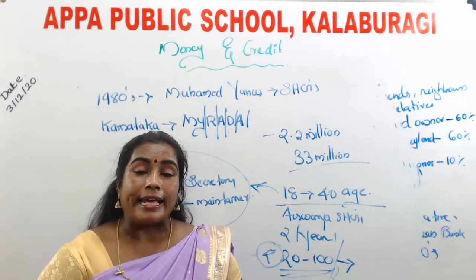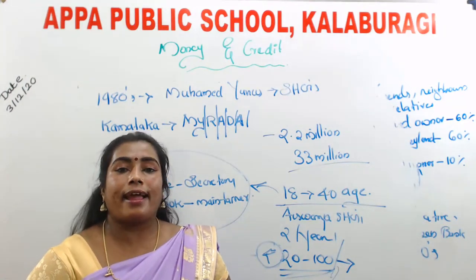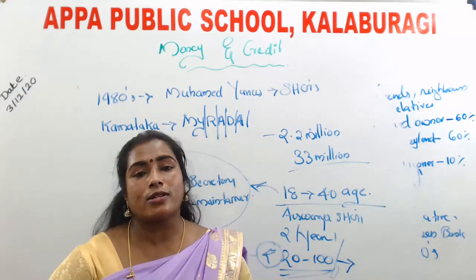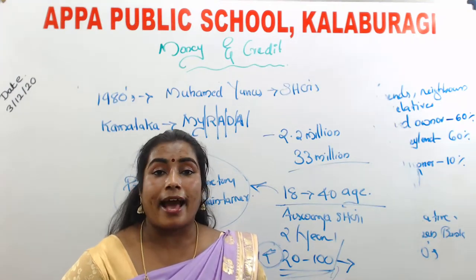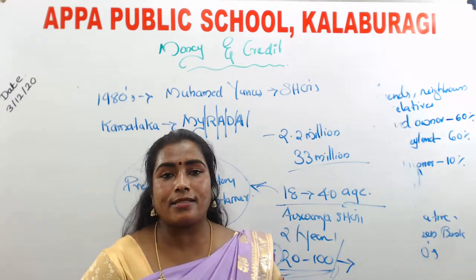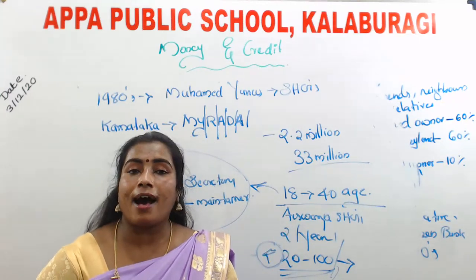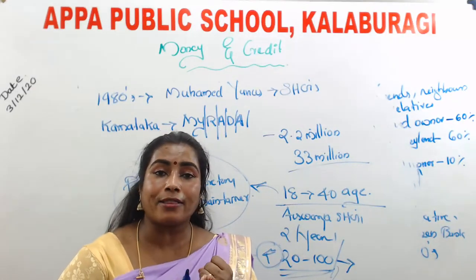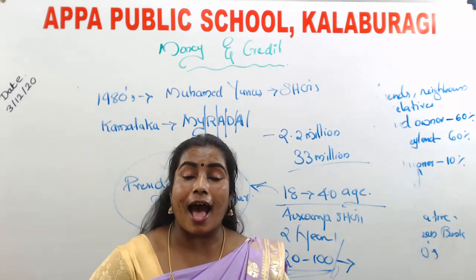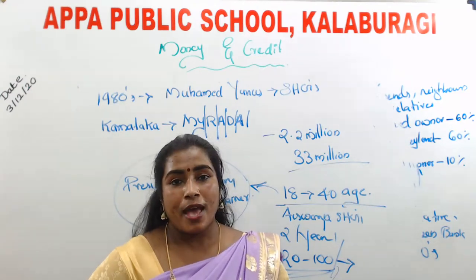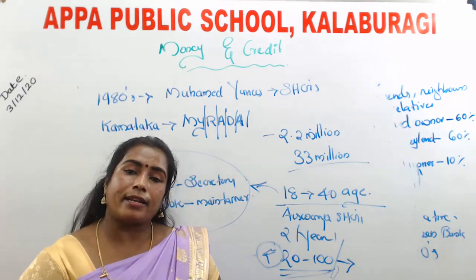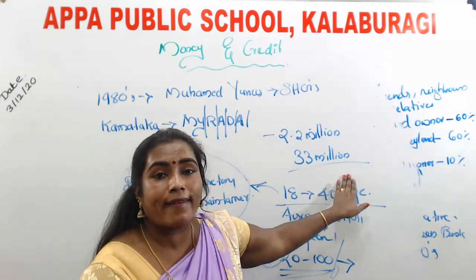The most important contribution of SHGs is that when women sit together, they discuss problems in their family or society — particularly health issues, domestic violence, and harassment. They discuss and find solutions. Many SHGs, particularly in Andhra Pradesh, Bihar, and Maharashtra, took the initiative to ban the use of alcohol. The anti-liquor movement of Andhra Pradesh was led by SHGs. In Maharashtra, selling and buying of tobacco products and other items has been totally banned because of movements led by SHGs.